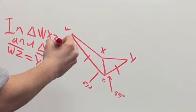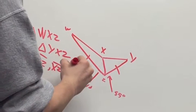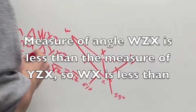Angle YZ is larger than angle WZ because of the hinge theorem, the measure of angle WZ is less than the measure of angle YZ. So WX is less than XY.